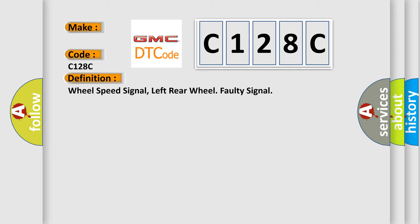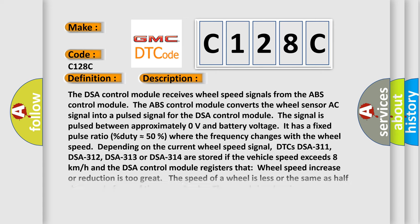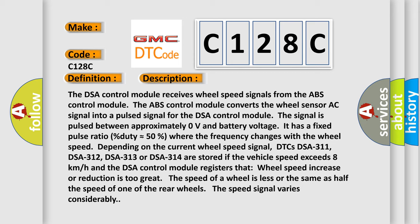And now this is a short description of this DTC code. The DSA control module receives wheel speed signals from the ABS control module. The ABS control module converts the wheel sensor AC signal into a pulsed signal for the DSA control module. The signal is pulsed between approximately zero volts and battery voltage. It has a fixed pulse ratio (duty approximately equals 50%) where the frequency changes with the wheel speed.